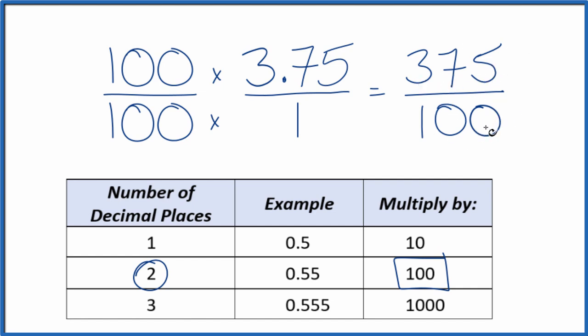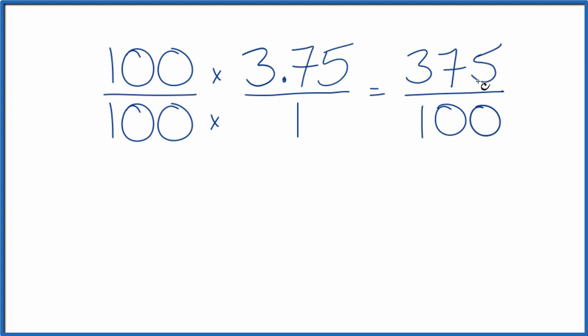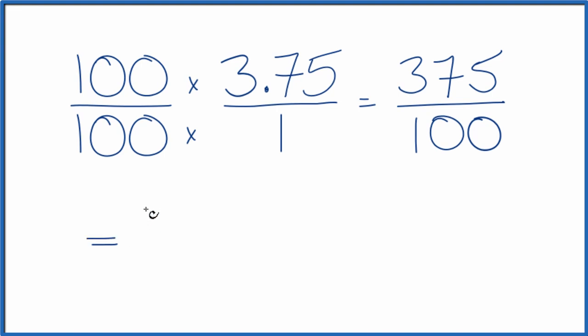Let's simplify this down and then convert it to a mixed fraction. So I think that 25 will go evenly into 375 and 100. So I divide 375 by 25, and I get 15. If I divide 100 by 25, I end up with 4. So I've got a fraction here now that's been simplified from 375 over 100 down to 15 fourths. I can't reduce this any further.